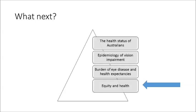You have now looked at the makeup of Australia's health status, what causes death, and related this to eye conditions and the epidemiology of vision impairment. This section has taken you through the burden of eye disease. Finally, in the next section we will consider equity and health — equity and health has already been discussed in both modules 1 and 2, but we are going to extend it further and have a look specifically at equity and health in eye care.